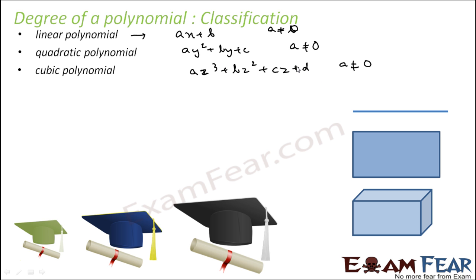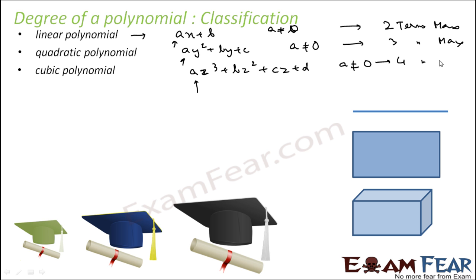Because if a equals 0 in the cubic form, it becomes bz squared + cz + d, which would be a quadratic polynomial. So the leading coefficient a must not be equal to 0. In the general expressions: linear polynomial has a maximum of 2 terms, quadratic has a maximum of 3 terms, and cubic has a maximum of 4 terms. The maximum power for linear is 1, quadratic is 2, and cubic is 3.